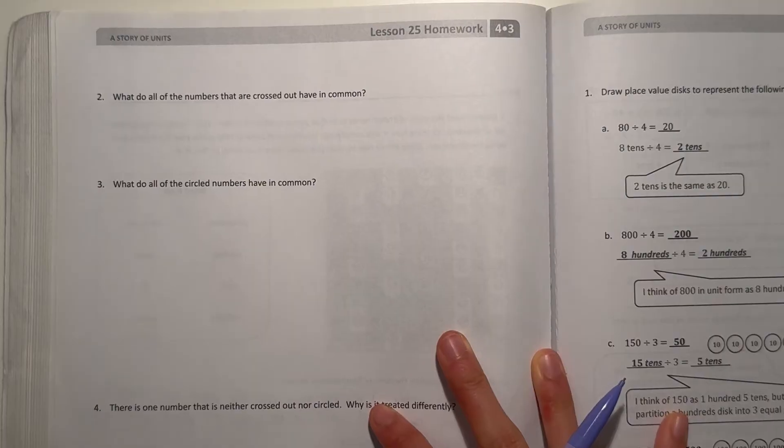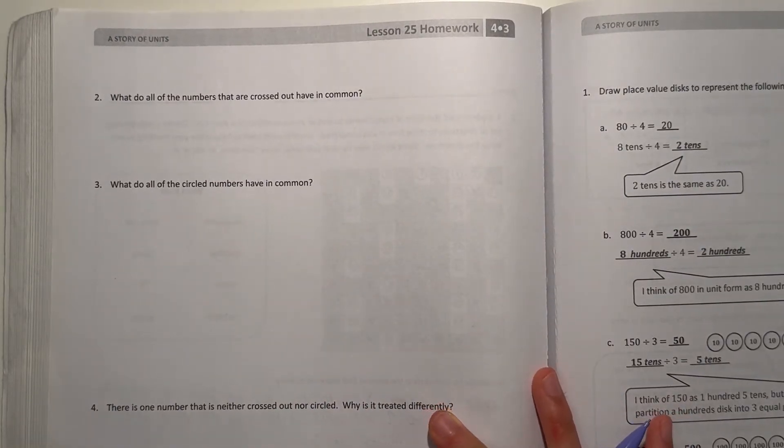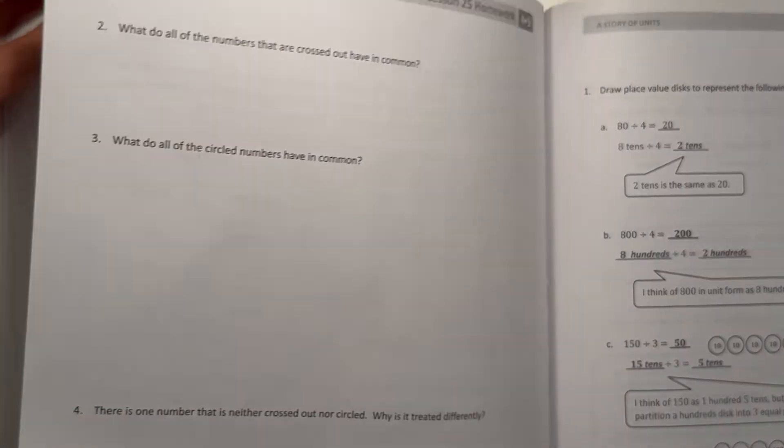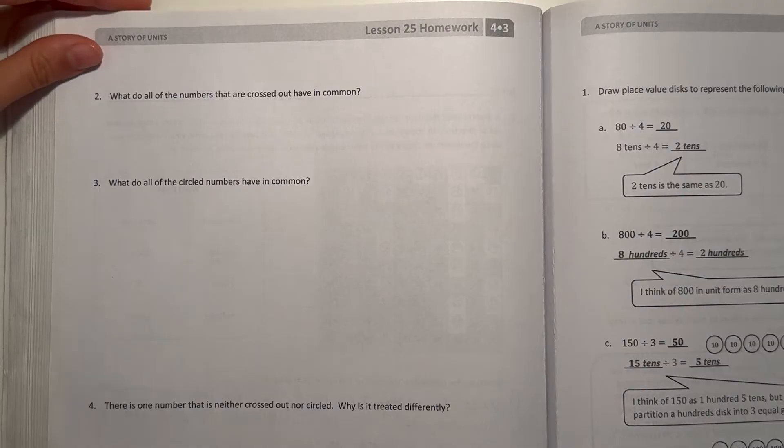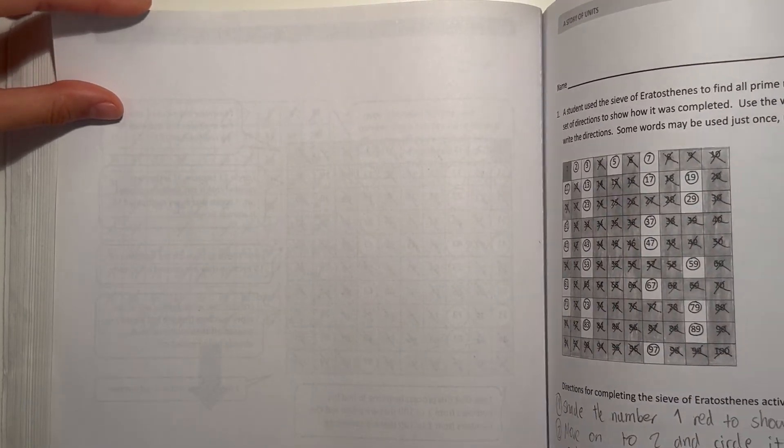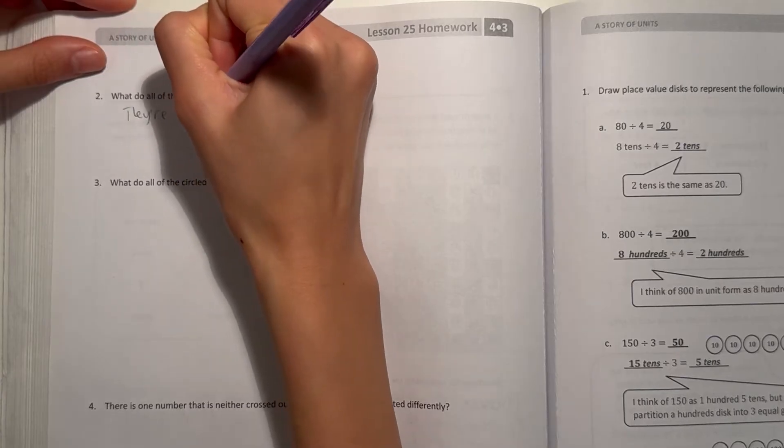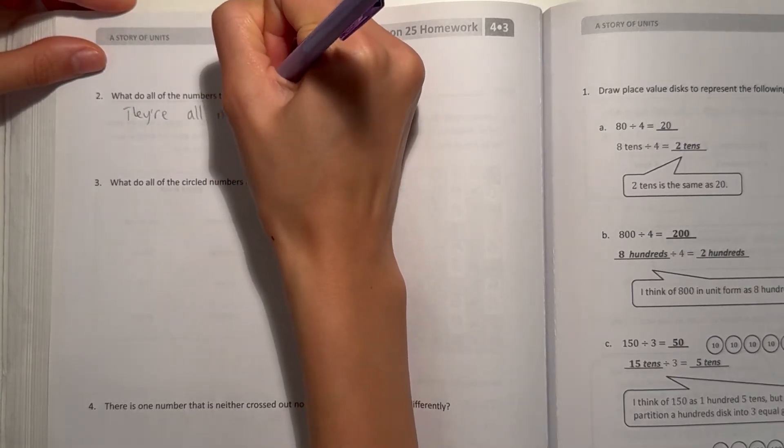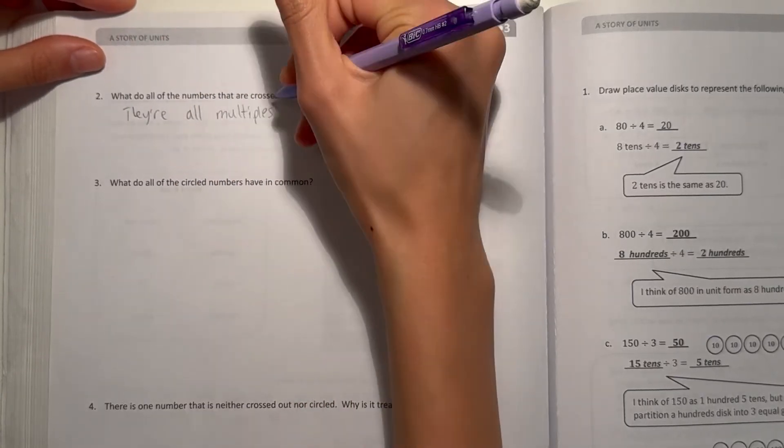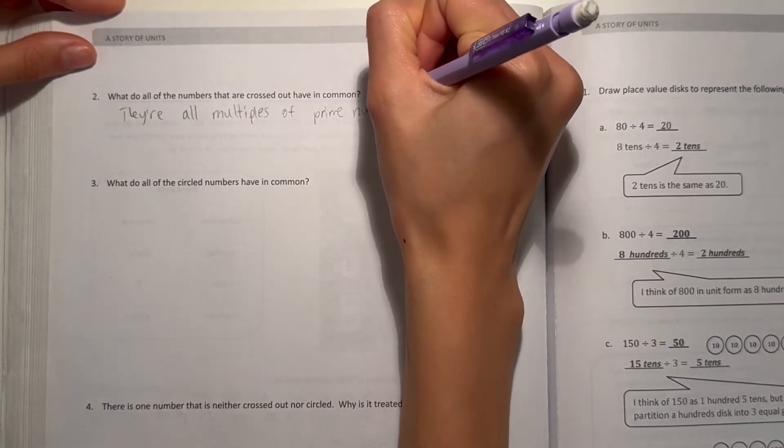Number two, what do all of the numbers that are crossed out have in common? Well all the numbers that are crossed out, they all have at least one, they all are multiples of prime numbers. They're all multiples of prime numbers.